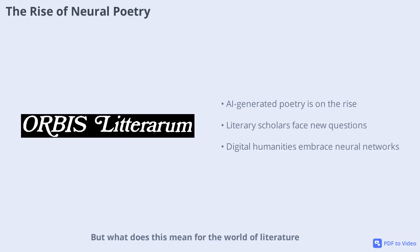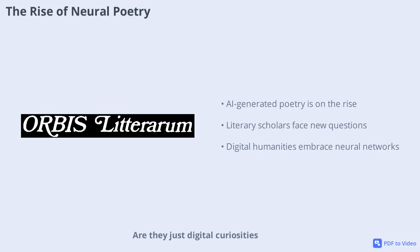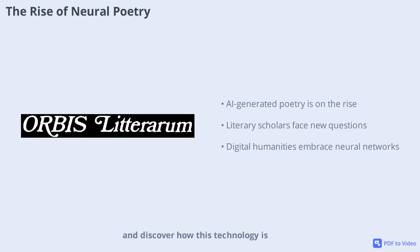As AI poems flood the internet, scholars and readers alike are left wondering: how should we interpret these machine-generated works? Are they just digital curiosities, or do they offer real insights into the art of poetry? In this video, we'll explore the evolution of computer-generated poetry, from early rule-based experiments to today's sophisticated neural networks, and discover how this technology is becoming an essential part of digital humanities.